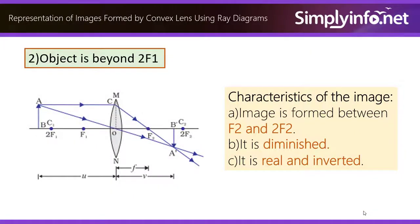Object is beyond 2F1. The image is formed between F2 and 2F2. It is diminished, it is real and inverted.